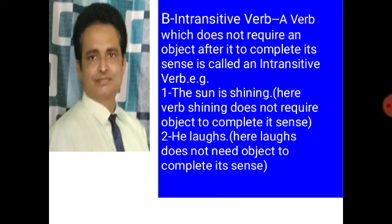A verb which does not require an object after it to complete its sense is an intransitive verb. For example: the sun is shining — 'is shining' does not require an object to complete its sense. Number two, he laughs — 'laughs' also does not require an object after it to complete its sense. So 'is shining' and 'laughs' are both intransitive verbs.